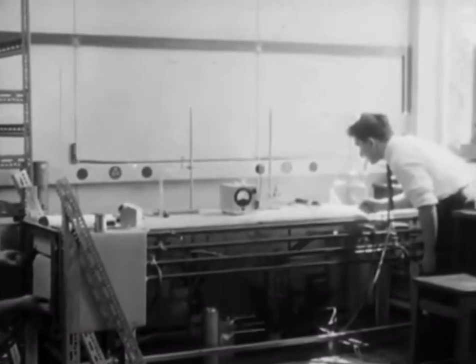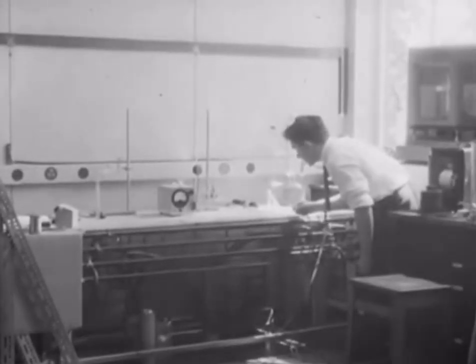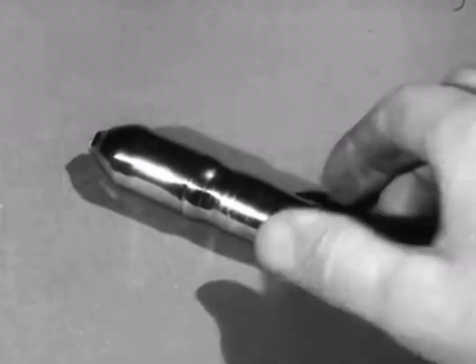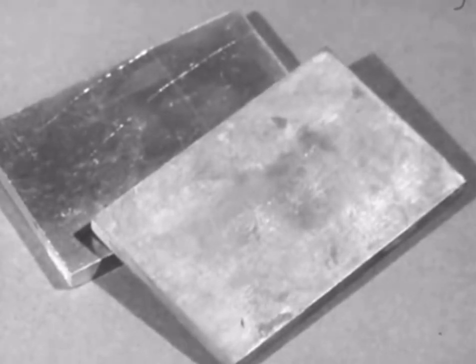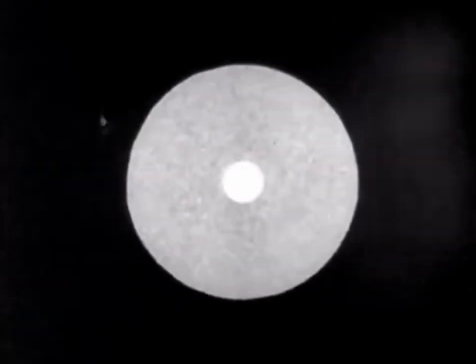The materials used in crystal diodes and transistors are known as semiconductors. The metal germanium here is a typical semiconductor. To understand its peculiar properties, we must consider why some metals, like copper, conduct electricity well, while other materials do not. To do this, we must study the structure of the atoms of these materials.